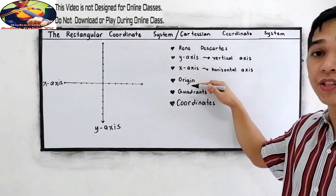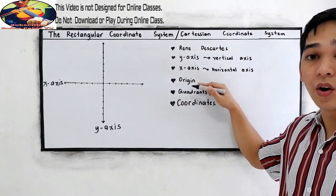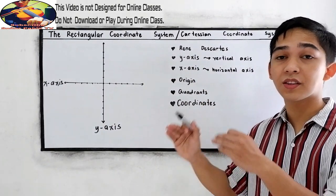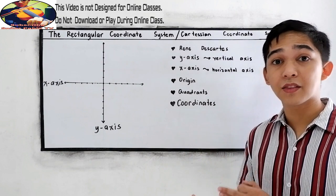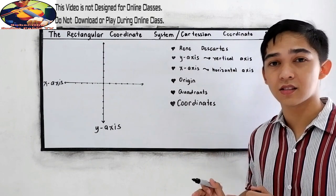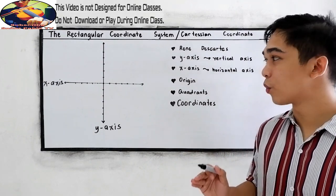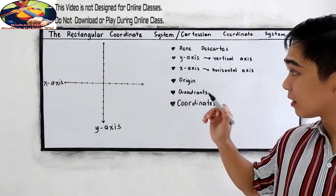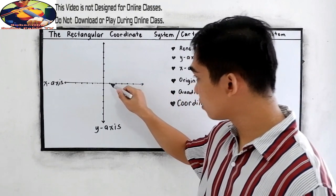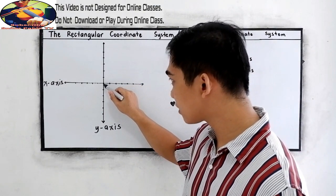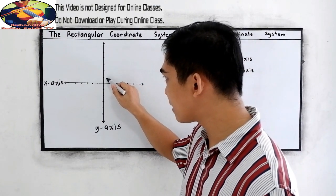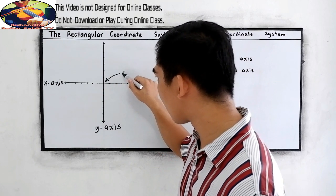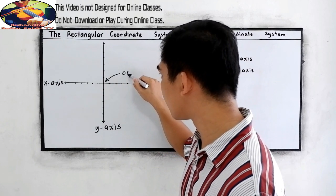The next term is the origin. The origin is the intersection of the horizontal axis and the vertical axis. We have a point here that is our intersection. Therefore, this is our origin.